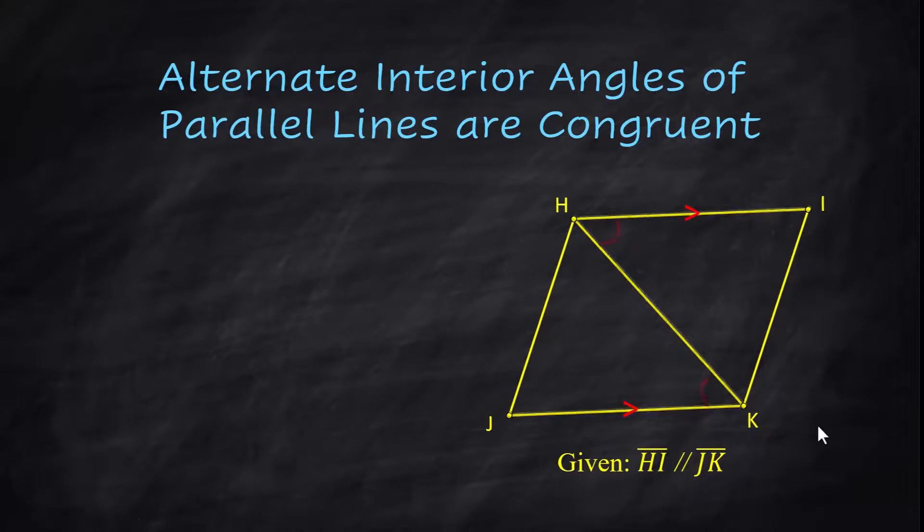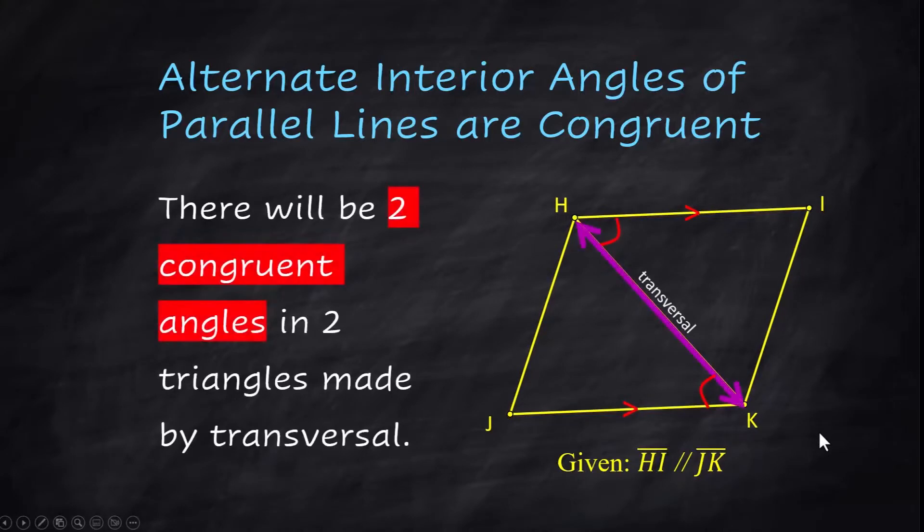There's going to be two congruent angles because you have two triangles here. There's the transversal that's cutting this figure in half and you're going to have an alternate interior angle here and an alternate interior angle here and they are congruent.